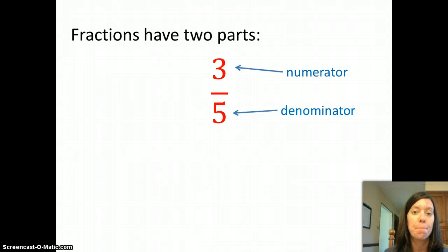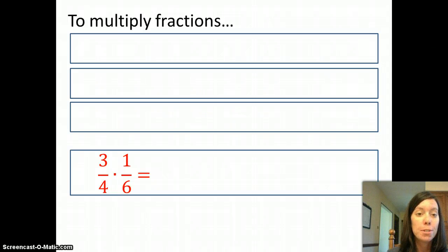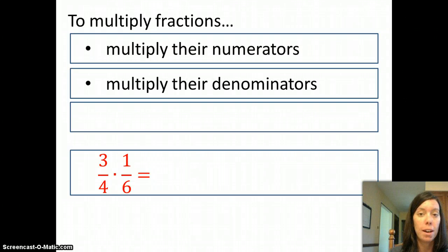So let's start with multiplying fractions. To multiply fractions there are three steps. The first thing you do is multiply together the numerators of the fractions, then you multiply the denominators of the fractions and you have your answer, but you want to write your answer in lowest terms, so the last thing to do is reduce.